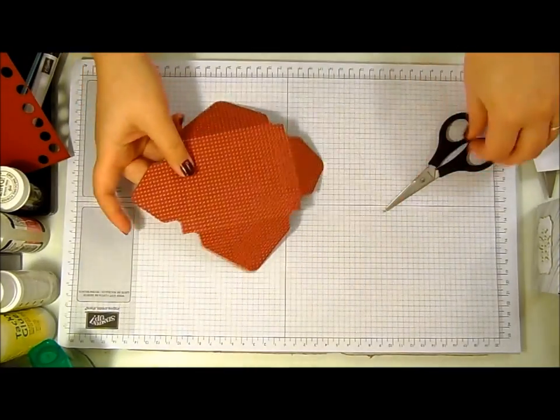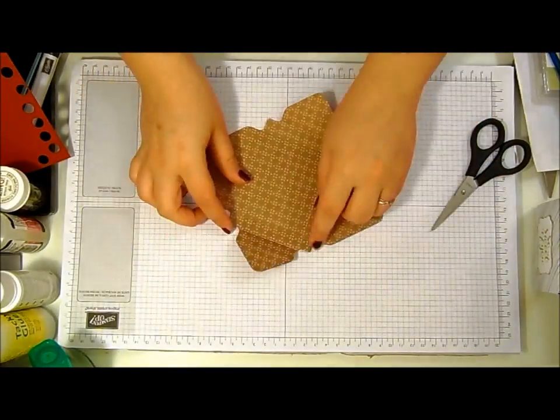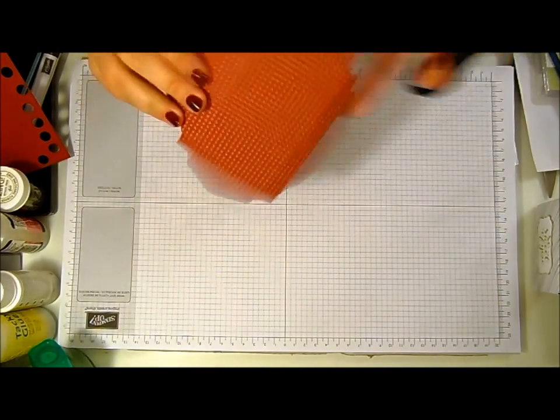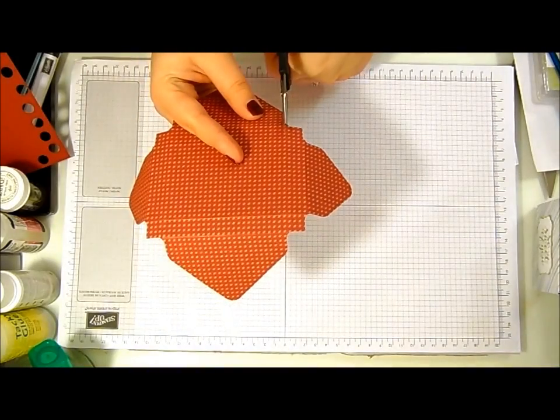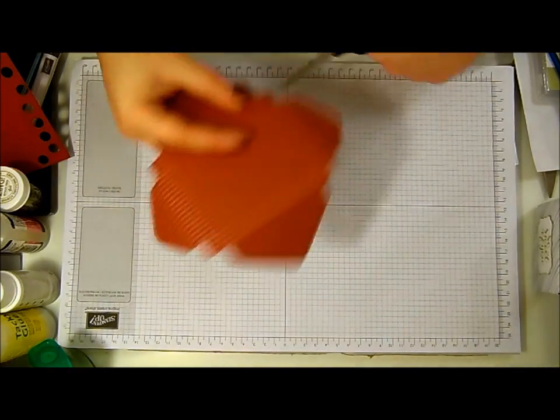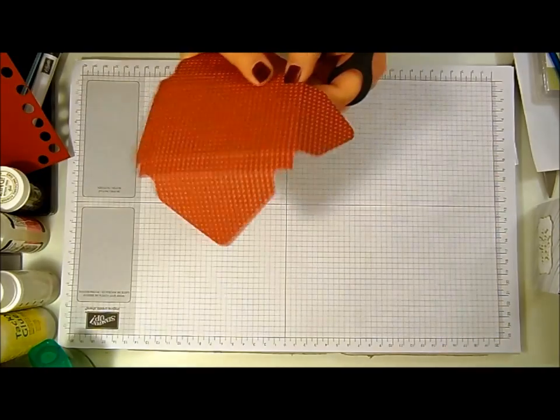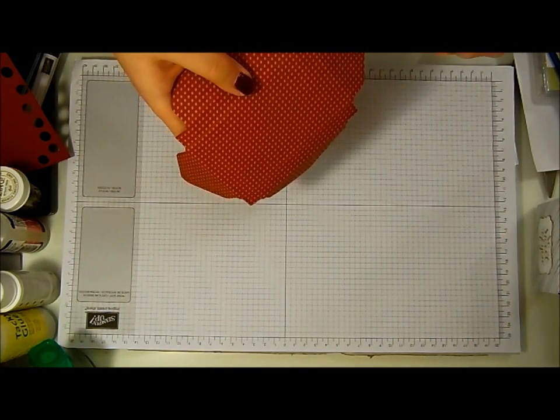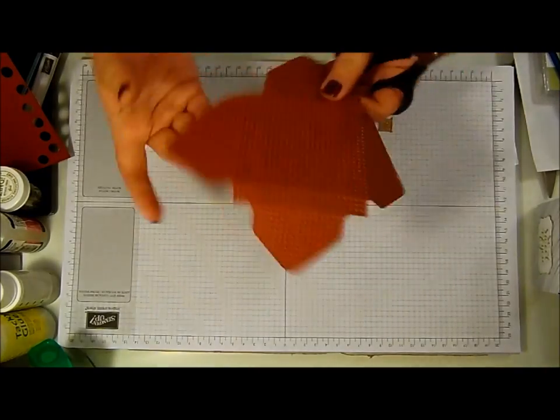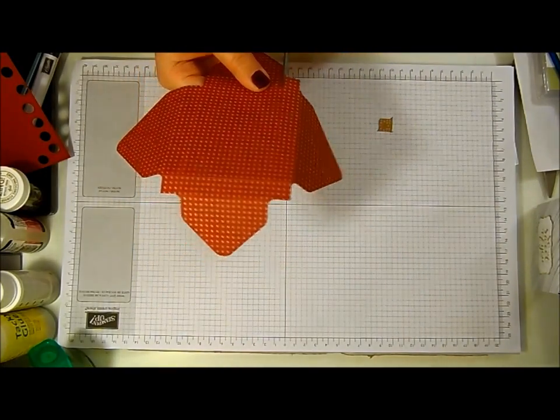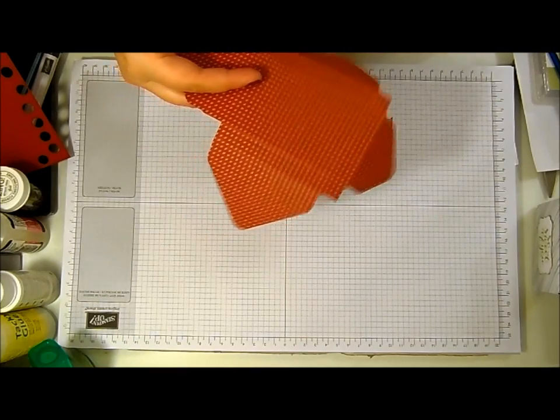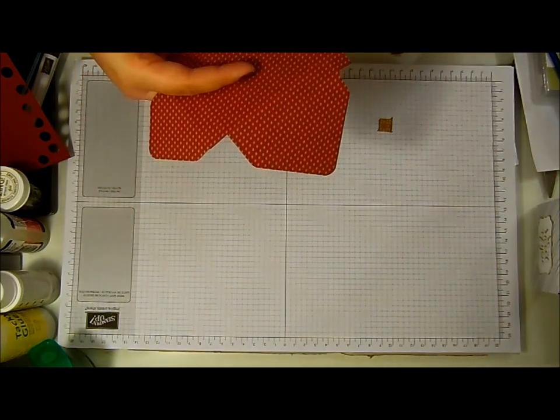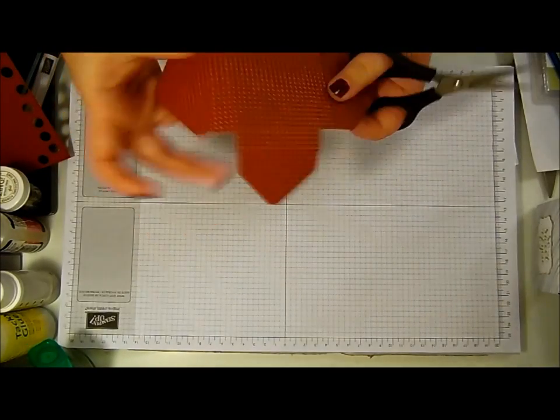So now we're going to take our paper snips and we've got little squares. We're going to cut the little squares off altogether. So we're going to cut down the score lines to cut those pieces off and last one.